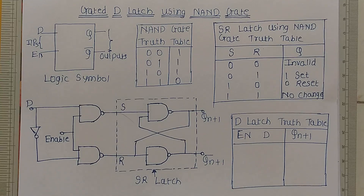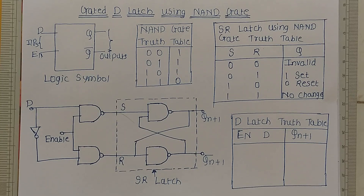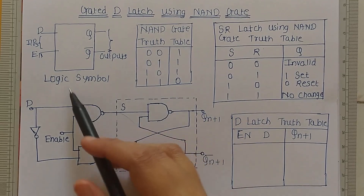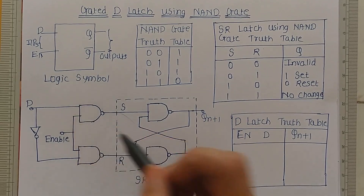In this video we will discuss the gated D latch using NAND gates. Like all other latches, the D latch can store data or information, so we can use it as a one-bit memory circuit. The D latch can store either a high or low state, meaning it stores a bit value of either one or zero. Here we can see the logic symbol of the gated D latch.